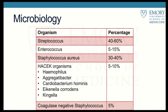Looking at the microbiology breakdown: about 50% of endocarditis is caused by streptococcus. Streptococcus and enterococcus tend to cause more subacute presentations. Staph aureus is rapidly becoming more common, especially in developed countries. We also have HACEK organisms which are more fastidious in growth, and coag-negative staph at about 5%.